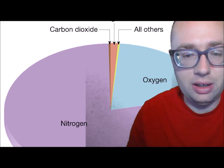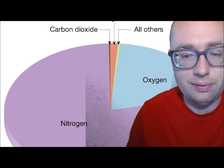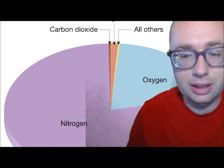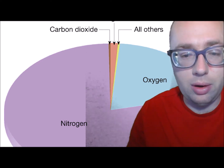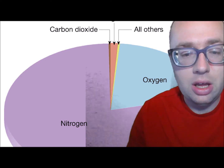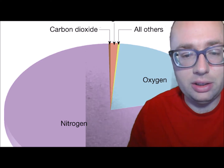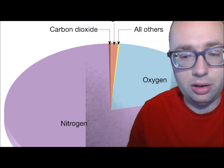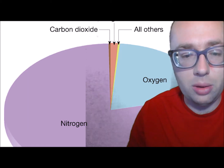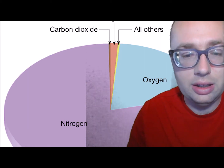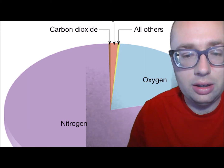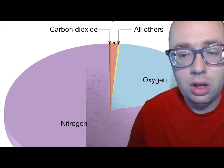The atmosphere is made up of mostly nitrogen, 78%, and oxygen, 21%. There are lots of other gases that are part of the atmosphere, but in much smaller amounts. These include argon, carbon dioxide, neon, helium, hydrogen, and more.